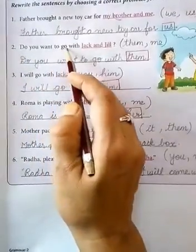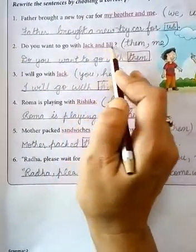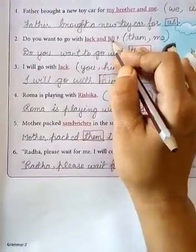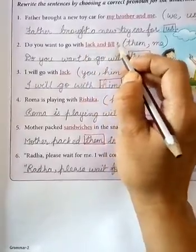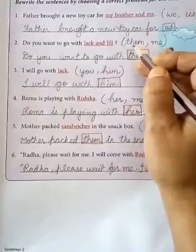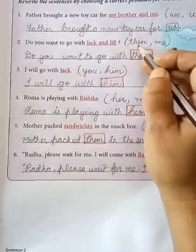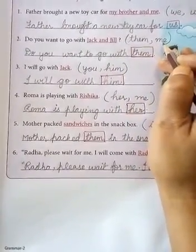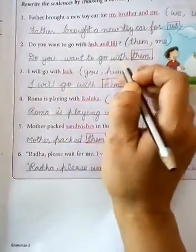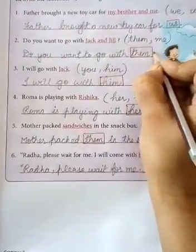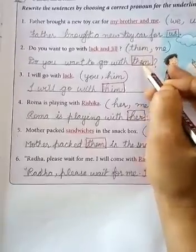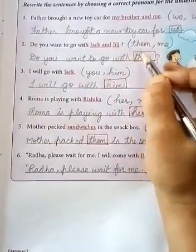Do you want to go with Jack and Jill? Jack is a boy, Jill is a girl, and now we have to replace both these nouns with some pronoun. What will you use for these two — them or me? Do you want to go with them? Yes, it is them. For two children, we will use them.